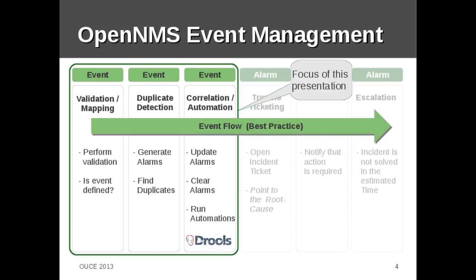The first category is validation and mapping, followed by duplicate detection where we generate alarms and try to find duplicates for increasing the repeat count. Also, we want to do correlation — we have a correlation automation category where we update alarms, clear alarms, and run automations. Correlation and automation is a category where we can use rules for more complex event sequences.